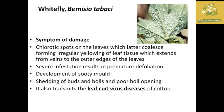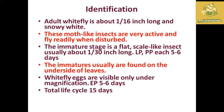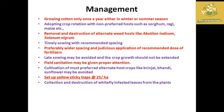Whitefly infestation can spread widely. The female body is white. The whitefly has 16 instars. It is immature through several stages. The life cycle continues throughout the year, even in winter and summer seasons.